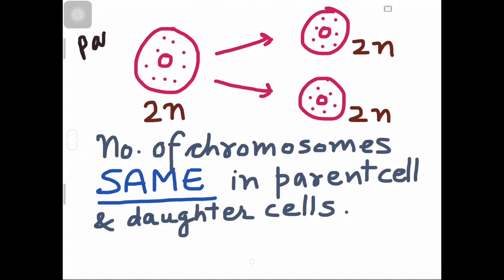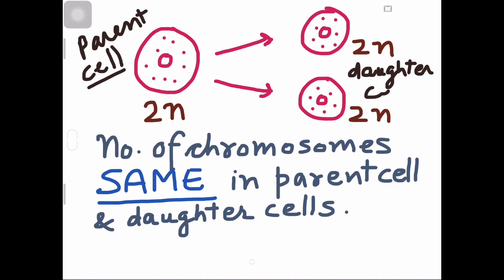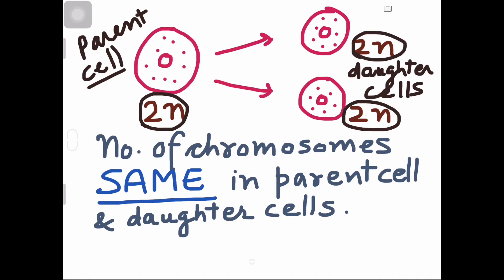This is the parent cell, the starting cell. From it, two daughter cells are being formed. And if the parent cell had 2n (diploid) chromosomes, then the daughter cells will also be 2n — they are also diploid cells.